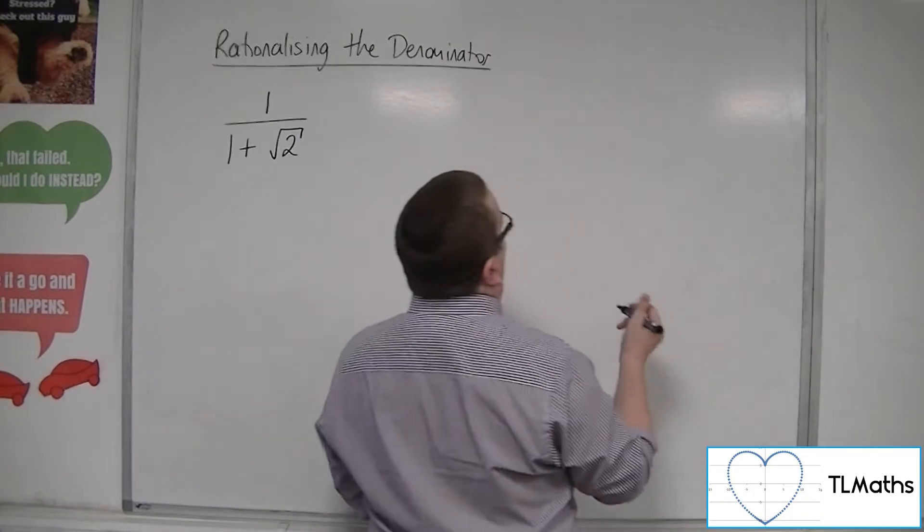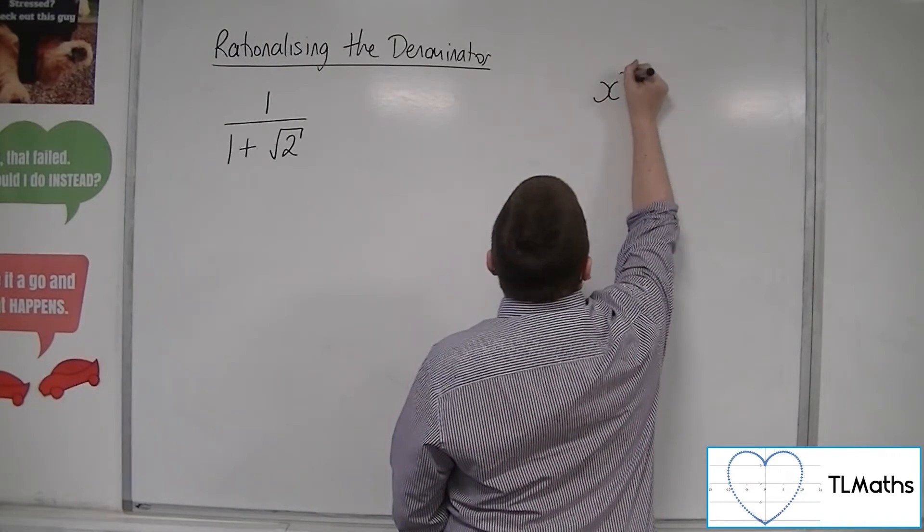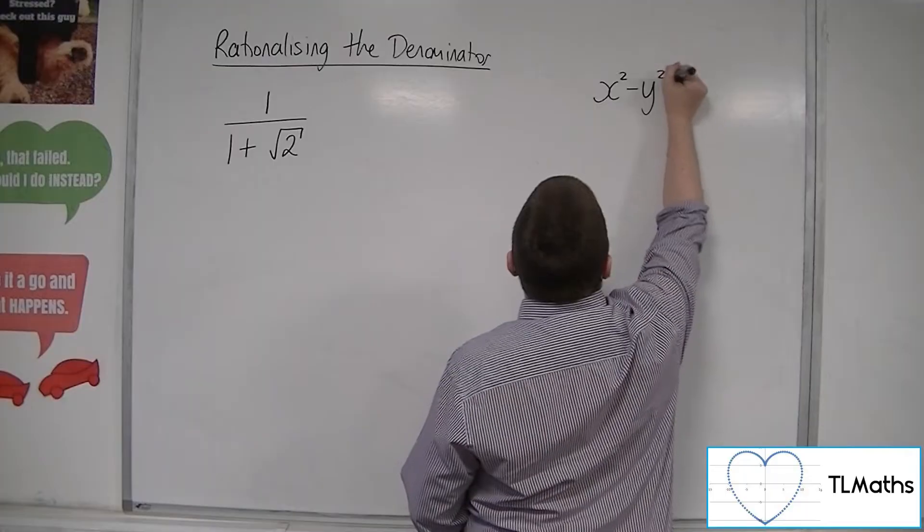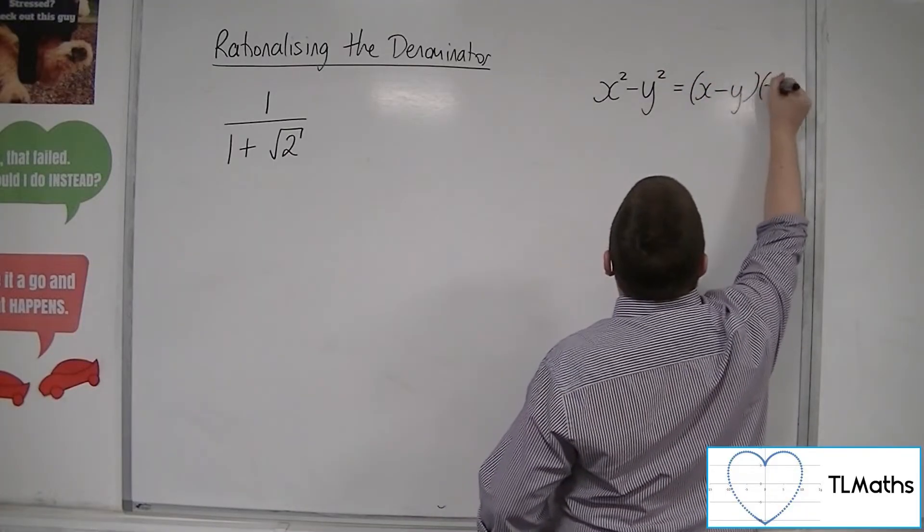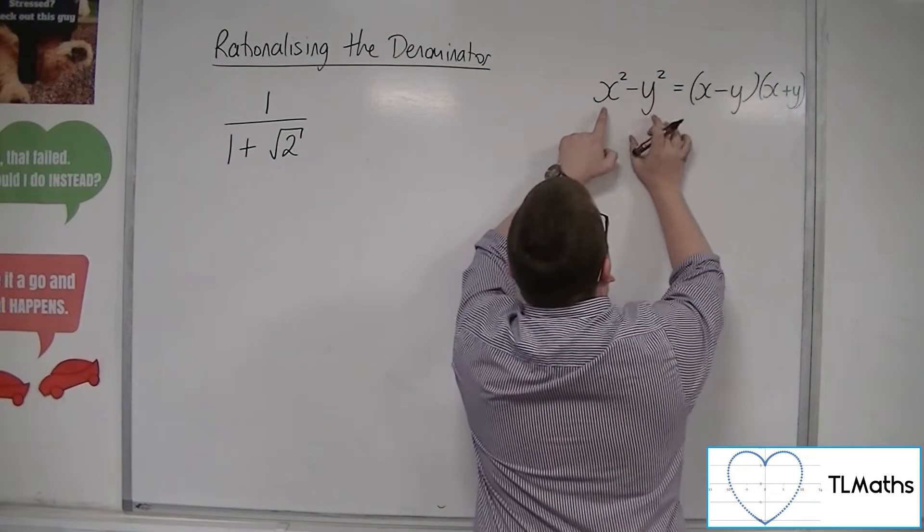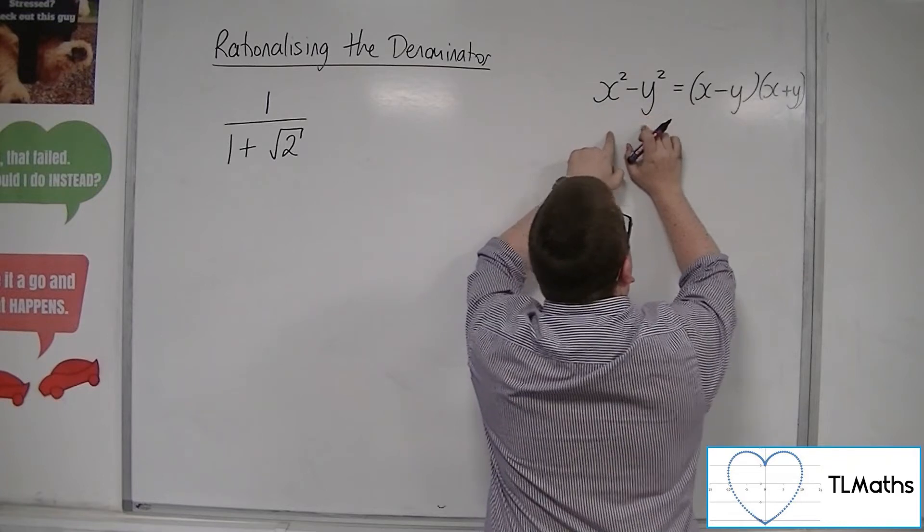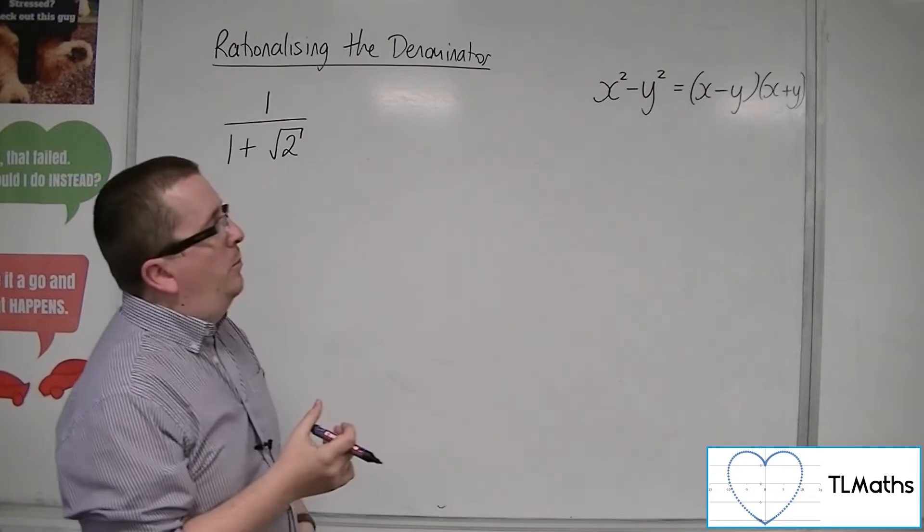So that was coming from the concept of the difference of two squares. So the difference of two squares is that x squared minus y squared is x minus y, x plus y. The difference of two squares, the subtraction between two square numbers, factorizes to make x minus y, x plus y.